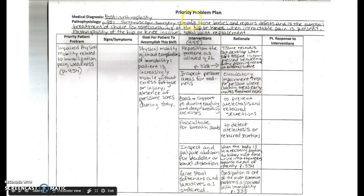So medical diagnosis is the first part here, and post arthroplasty is what I chose for my medical diagnosis. So they've had hip or knee replacement. This would fit either one. Pathophysiology. I found that on page 951 where it talks about arthroscopic surgery, just under the pharmacology capsule. And so I summarize that. Arthroscopic surgery removes loose bodies and repairs defects and is the surgical treatment of choice for osteoarthritis of the hip or knee when intractable pain is present. Arthroplasty of the hip or knee involves total joint replacement.